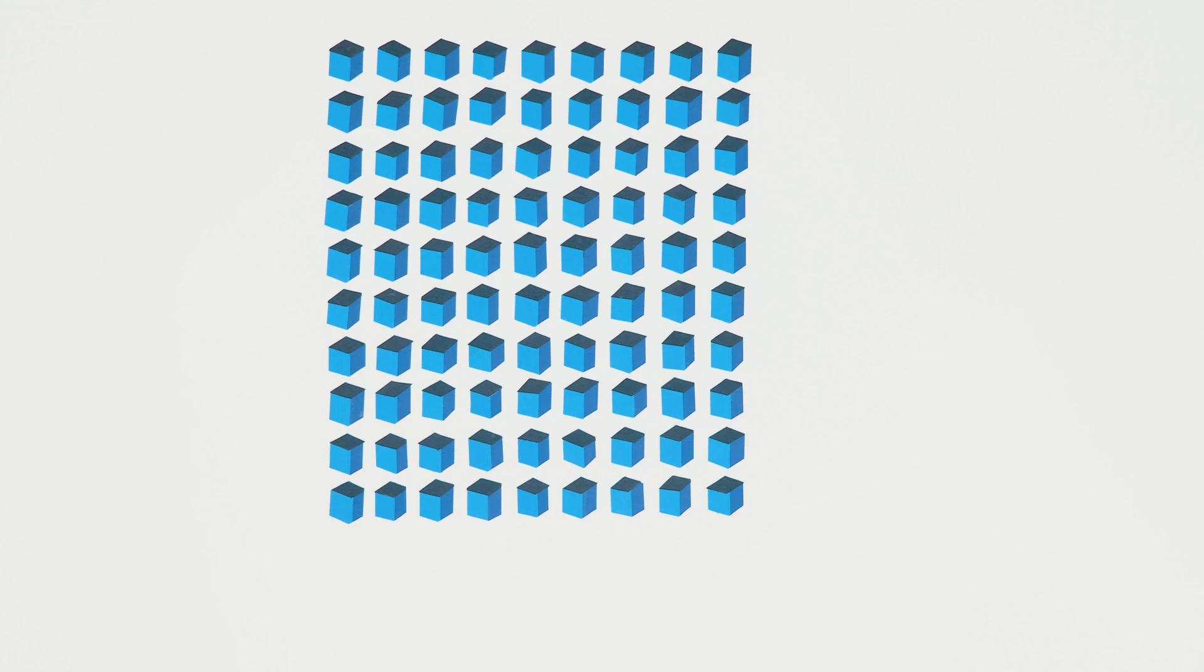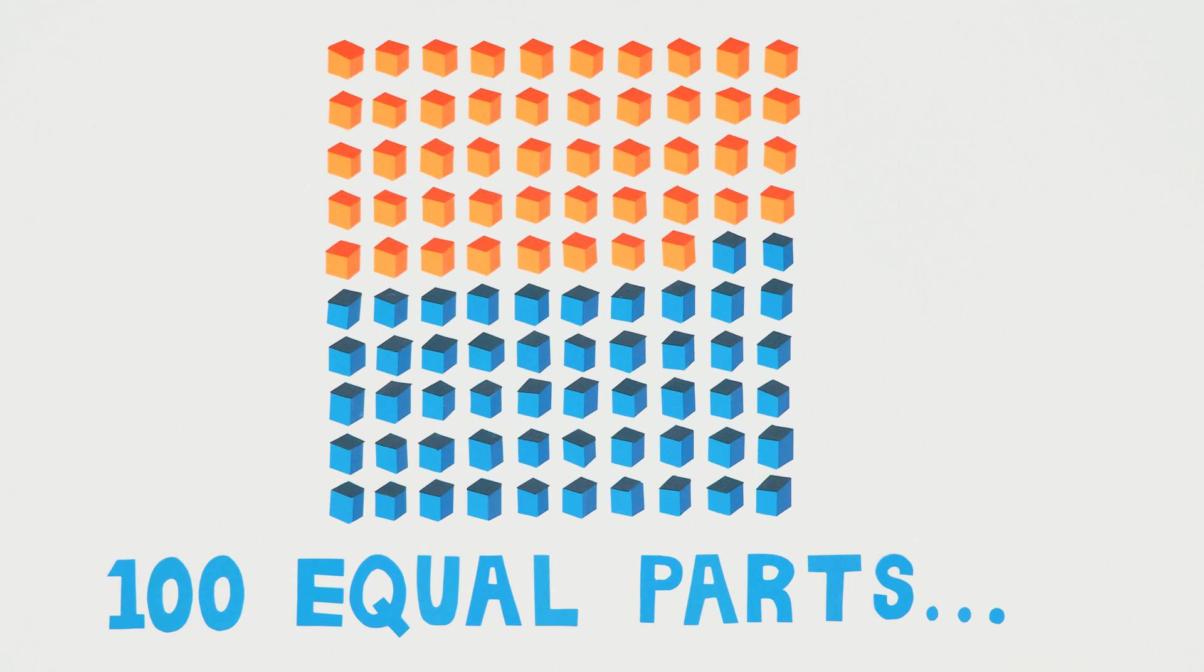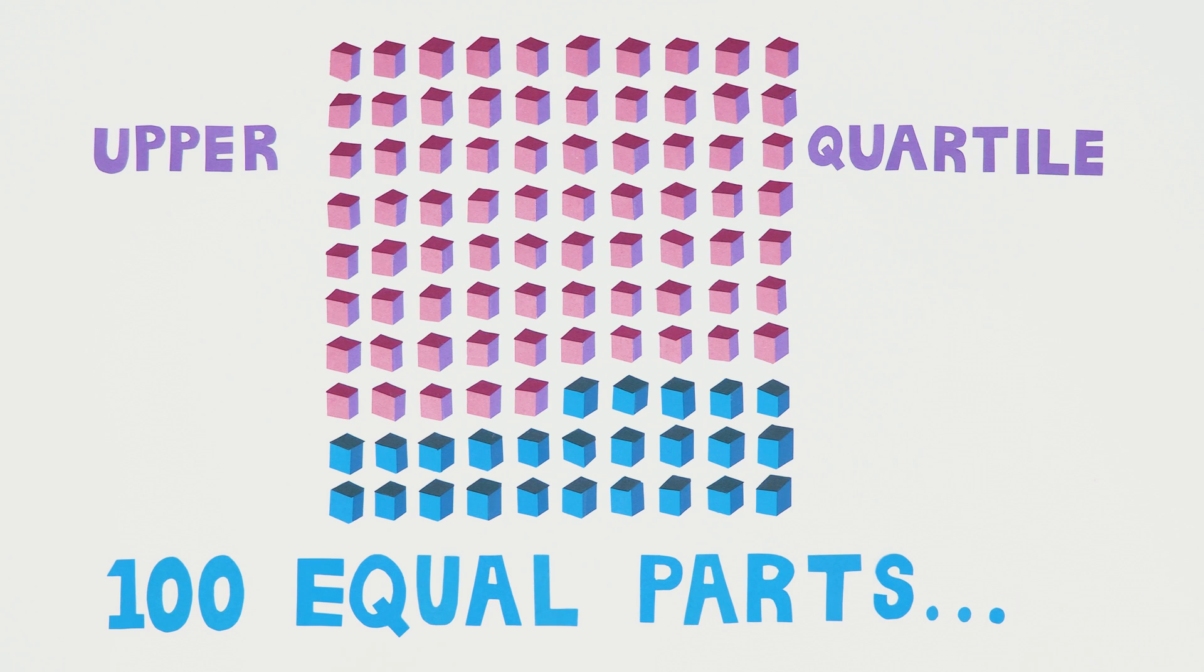A percentile is simply a way of dividing a data set into a hundred equal parts. Some percentiles have special names. For example, we call the 50th percentile the median, and the 75th percentile the upper quartile.